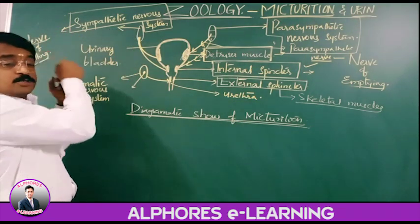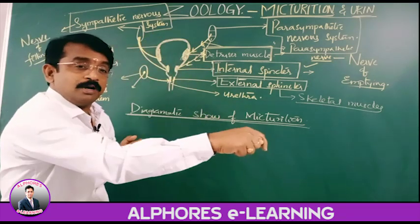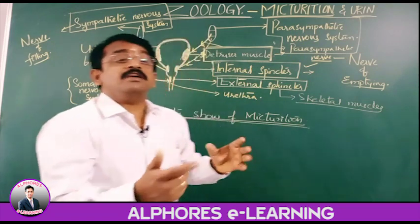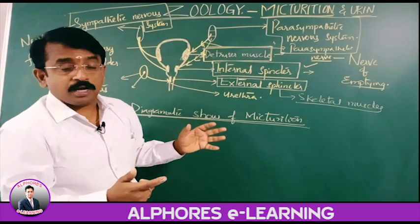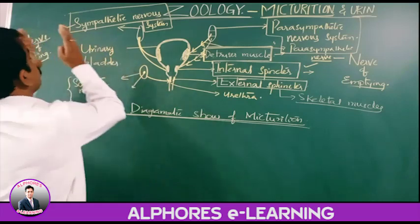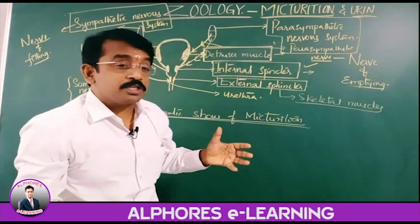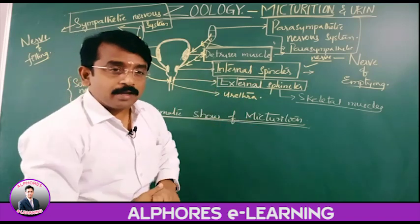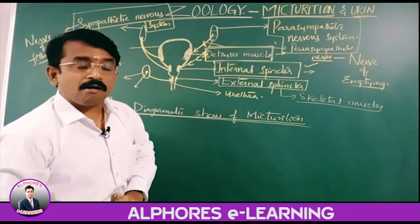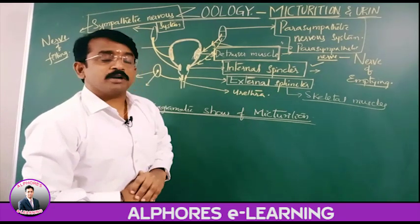Here also, the sympathetic nervous system is responsible for filling of the urinary bladder with urine, whereas the parasympathetic nervous system causes the emptying. One is for filling, one is for emptying — that is why sympathetic and parasympathetic are antagonistic with each other, opposite in functioning.